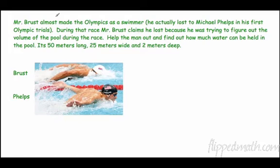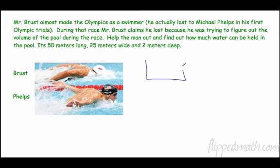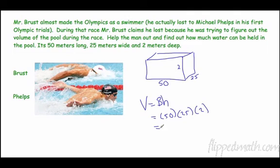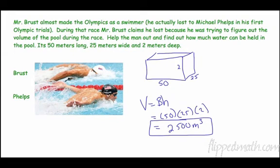For the word problem: a swimmer wants to find the volume of a pool. A pool is a prism. It's 50 meters long, 25 meters wide, and 2 meters deep. Volume equals B times h, so 50 times 25 times 2 equals 2,500 cubic meters of water — in other words, a lot of water.